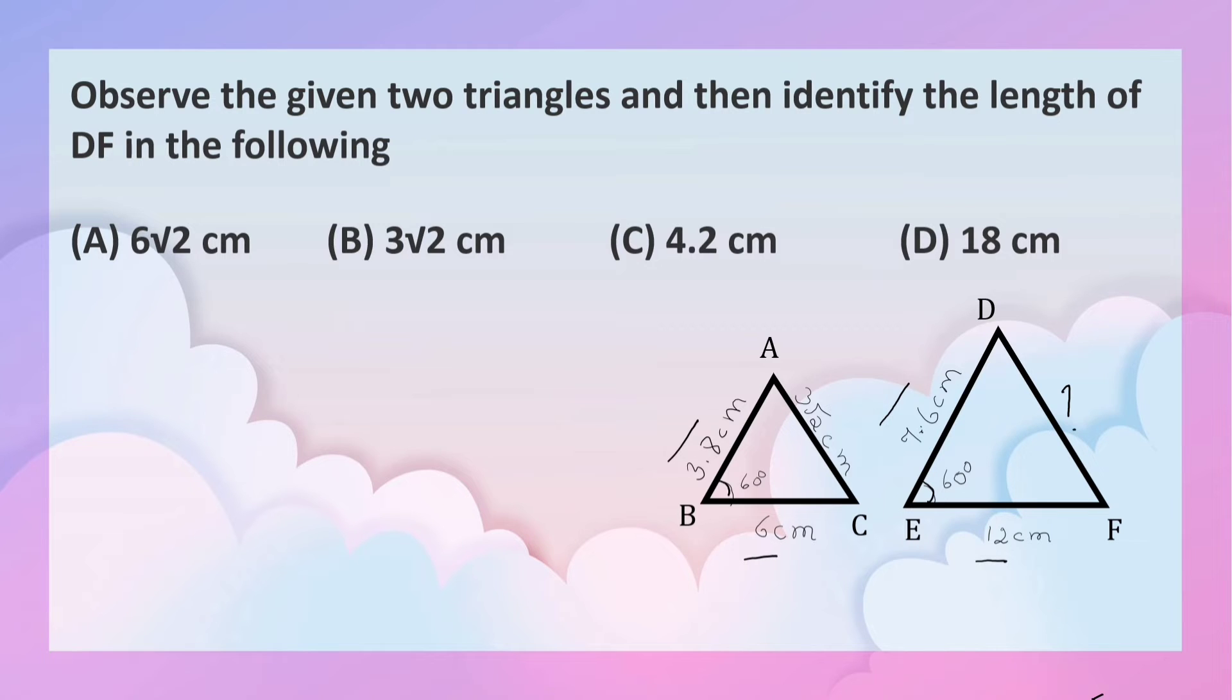So, according to SAS criterion of similarity, we can say that triangle ABC is similar to triangle DEF. So, the corresponding sides must be in proportion.